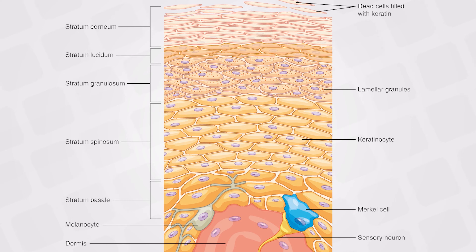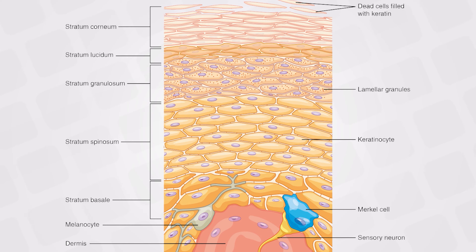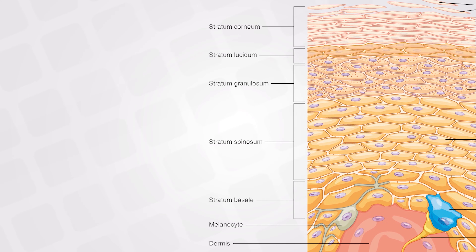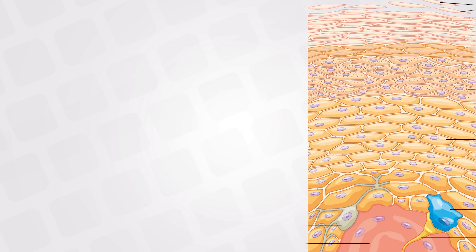These are the layers that form the epidermis. The epidermis, with the dermis and the subcutaneous fat, together form the skin. By the way, the skin is the largest organ in the body. Students commonly answer the brain, the lungs, or sometimes the liver, but the correct answer is the skin. Now let's look at the function of each of the layers forming the epidermis.